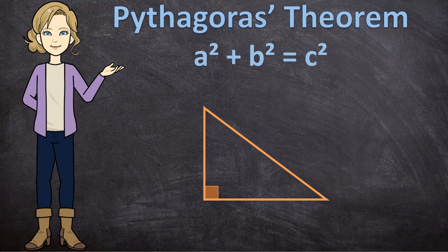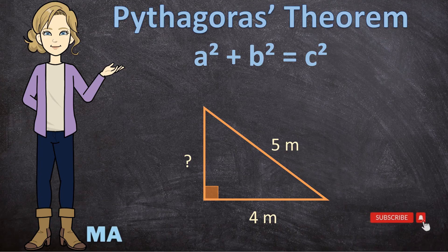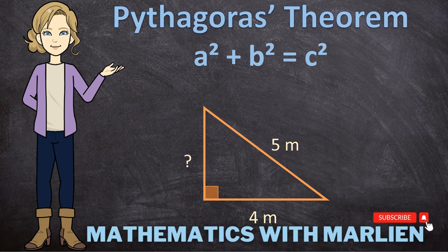In this video we are going to use Pythagoras theorem to calculate a missing side length by using the length of the hypotenuse and the length of the other side. Hello everyone and welcome to Mathematics with Marlene — let's get started.